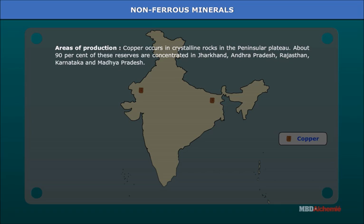Copper mines in Jharkhand include Mosabani, Rakha, and Dhobani mines. Rajasthan has mines in Jhunjhunu, Khetri mines, and Koh Dariba in Alwar. Other copper-producing areas include Khammam in Andhra Pradesh, Hassan and Chitradurga in Karnataka, Sikkim, Kullu, and Himachal Pradesh.